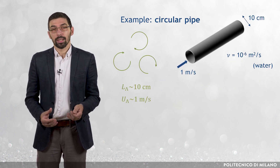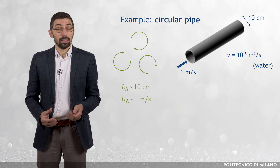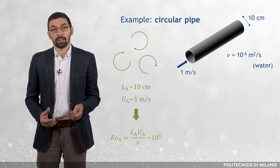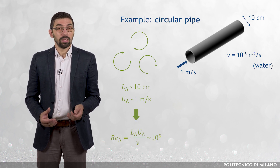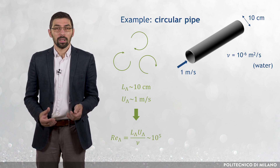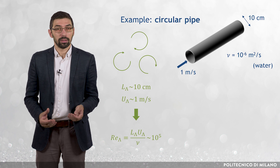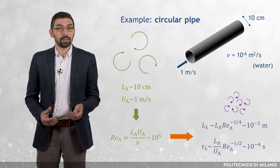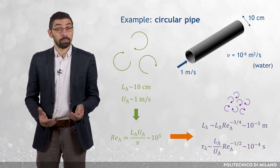Therefore, L_Λ is of the order of 10 centimeters and U_Λ is of the order of 1 meter per second. Thus, the integral scale Reynolds number, Re_Λ, is of the order of 10⁵. Applying the formulas previously introduced, the Kolmogorov length and time scales are of the order of 10⁻⁵ meters and 10⁻⁴ seconds, respectively.